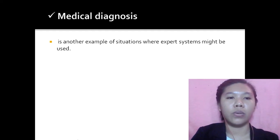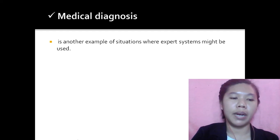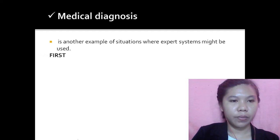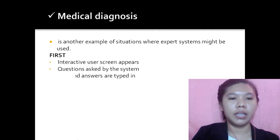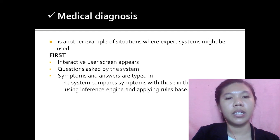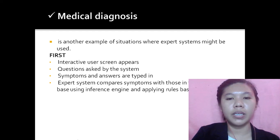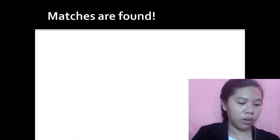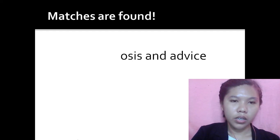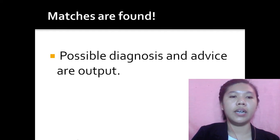The second example is medical diagnosis. First, an interactive user screen appears, and questions are asked by the system. Symptoms and answers are typed in. The Expert System compares symptoms with those in the knowledge base using the inference engine and applying the rules base. Matches are found, and possible diagnoses and advice are output.